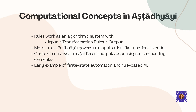Modern computational linguistics uses similar approaches when building semantic networks and ontologies. Panini's Ashtadhyayi essentially functions as an algorithm for language generation. It follows a computational model of input, transformation through rules, and output. The system includes meta-rules which govern how other rules are applied, similar to functions in modern programming. It also contains context-sensitive rules that produce different outputs depending on surrounding elements. In many ways, this represents an early example of what we now call a finite-state automaton and rule-based artificial intelligence. The systematic transformation of linguistic inputs through clearly defined rules is remarkably similar to how modern computational systems process information.